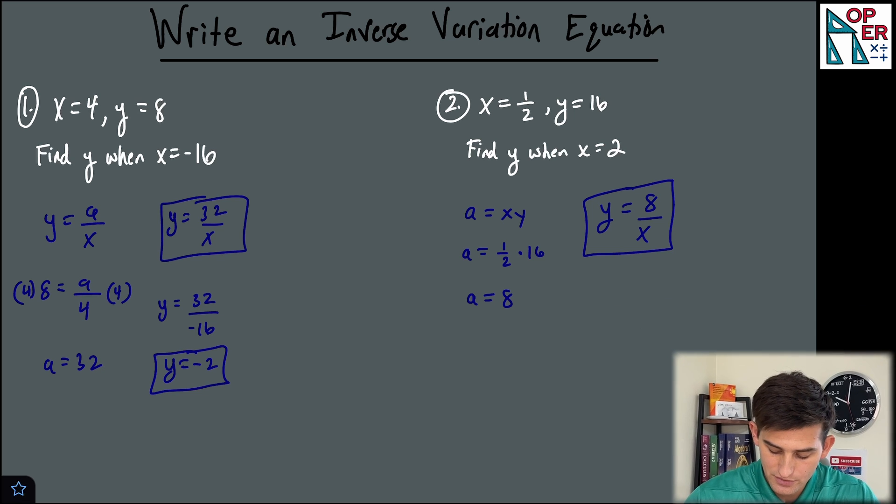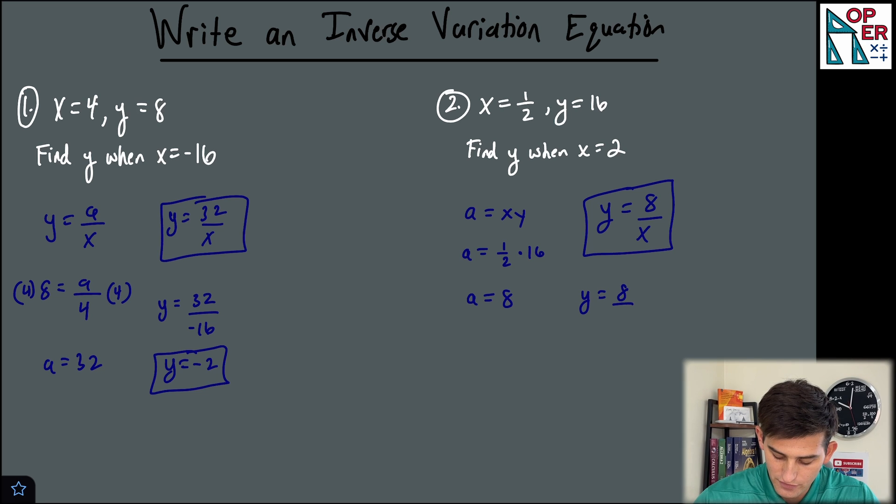And now we wanna know what y is when x is two. So we just plug in two for x and we get y is equal to four when x is equal to two. And that is how you can write an inverse variation equation.